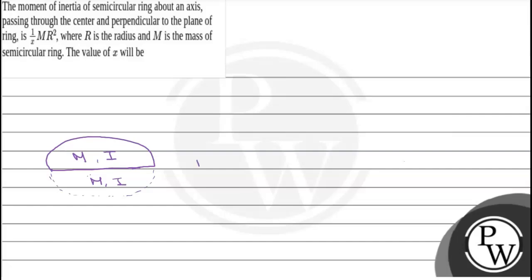So, the whole ring's moment of inertia will be 2I or it can be written as 2MR². That means the semicircular ring's moment of inertia will be I, and I is basically MR², or it can be written as (1/1)MR².